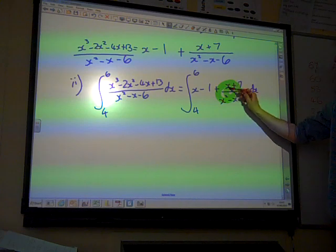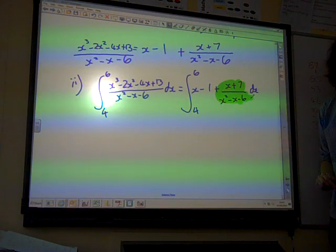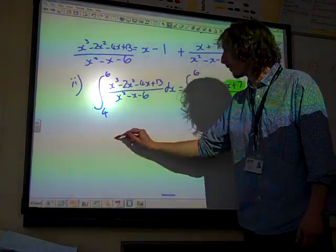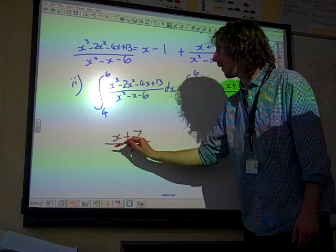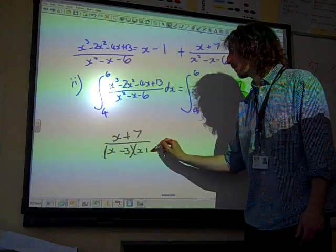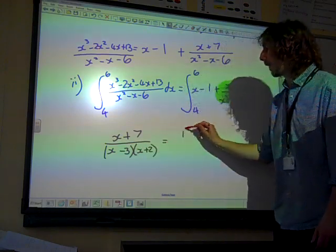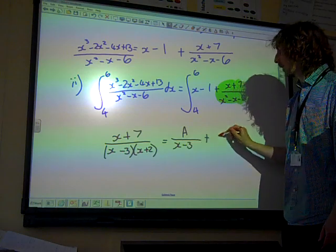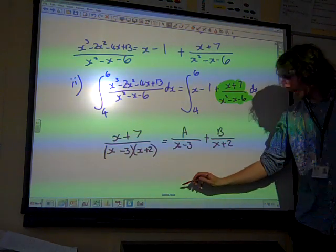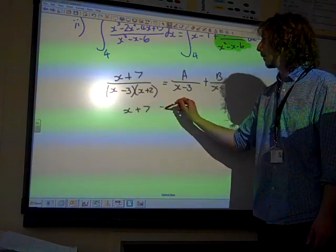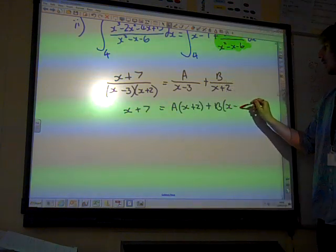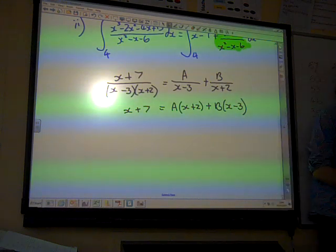So we've got to just look at this bit. Leave that bit for now, just look at that bit there. And that, we're going to have to integrate that using partial fractions. X plus 7 over, well X squared minus X minus 6 is X minus 3 times X plus 2. So that's A over X minus 3 plus B over X plus 2. So we now need to do our partial fractions thing with this.